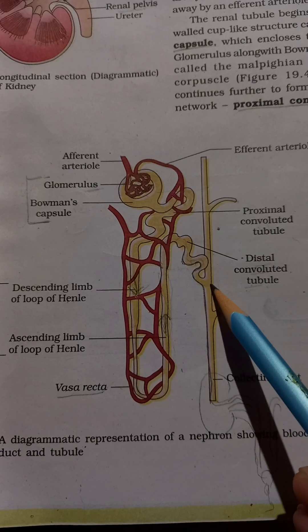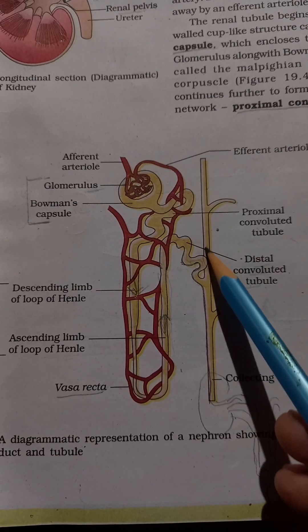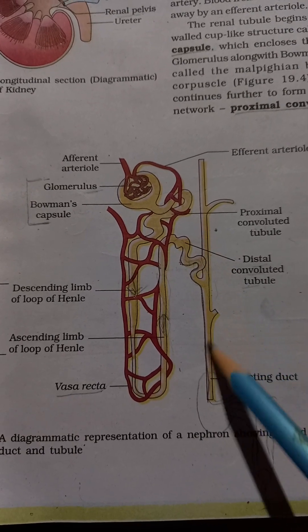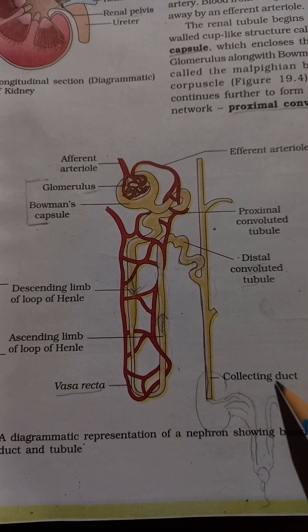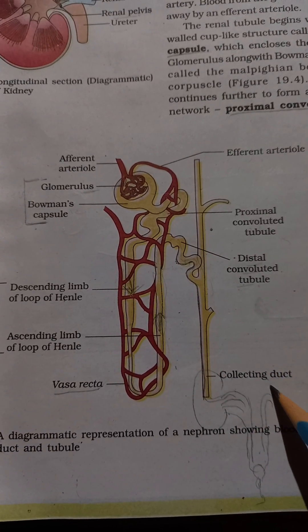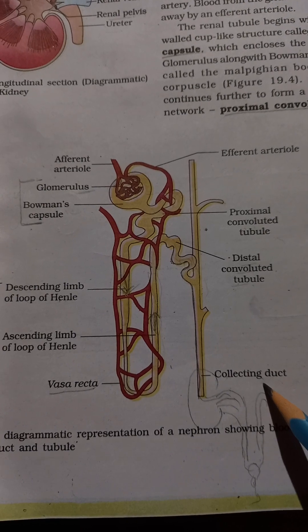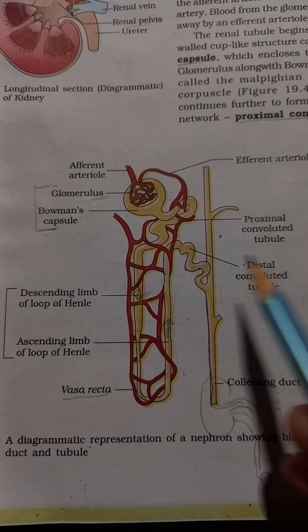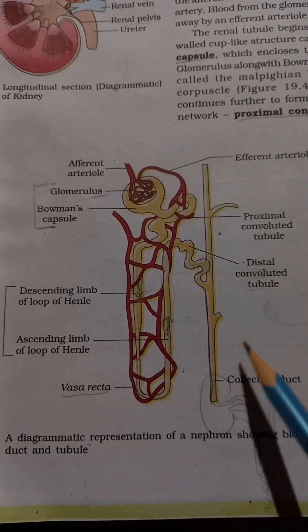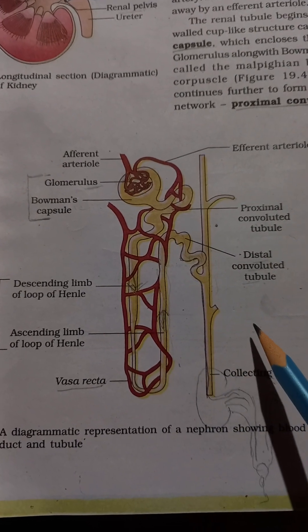After the Loop of Henle, the filtrate goes to the DCT — distal convoluted tubule — which is a curved structure. After the DCT, the filtrate passes into the collecting duct, which is a common duct that carries urine out. This completes the structure of the nephron.